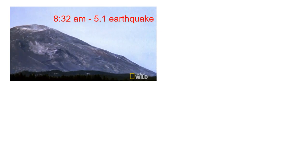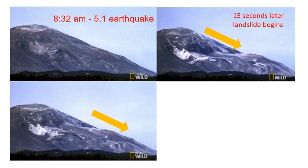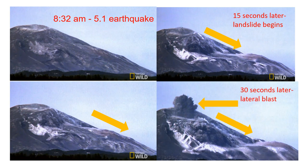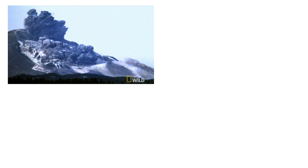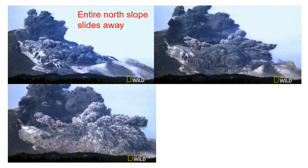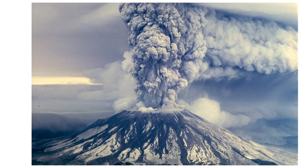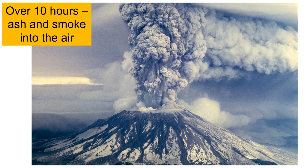At 8:32 the earthquake began. The landslide begins in a downward slope and continues. Then a lateral blast begins. As the earthquake continues, the entire north slope slides away from the volcano. Ash, steam, and rock are blasted upwards. For over 10 hours, ash and smoke billowed into the air and across the United States.